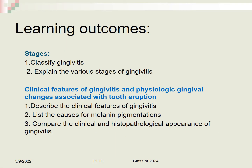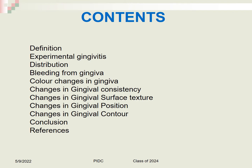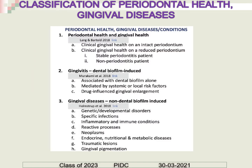The learning outcomes from this class include classifying gingivitis, explaining the various stages of gingivitis, describing the clinical features of gingivitis, listing the causes for melanin pigmentations, and comparing the clinical and histopathological appearance of gingivitis. The 2017 classification of periodontal diseases has classified a separate entity called periodontal health and gingival diseases.